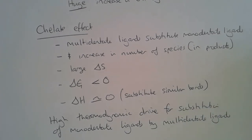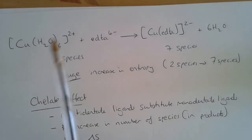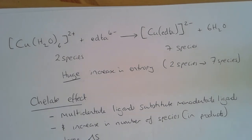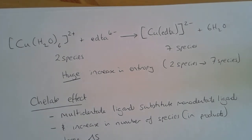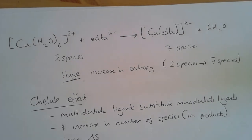The best example is EDTA, which is an extremely powerful chelating ligand. It will substitute almost any other ligand because we go from a smaller number of species to a larger number of species, giving a large increase in entropy. A large increase in entropy, assuming ΔH ≈ 0, means the reaction is spontaneous and can occur at most temperatures.